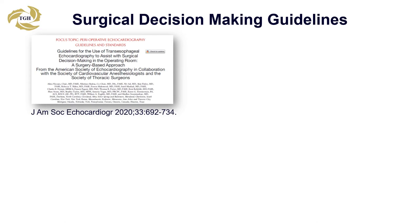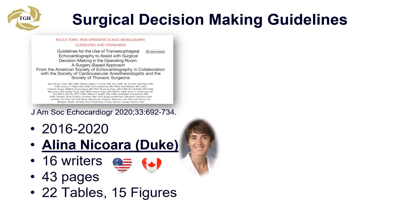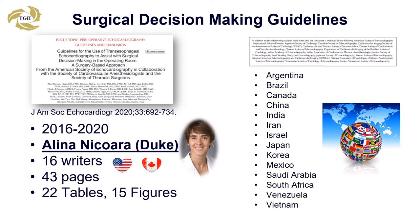Let's turn our attention to the surgical decision-making guidelines published in 2020. The project began in 2016, took a hiatus, and thanks to Dr. Alina Nakora from Duke, got back on track and was finished. The project had a diverse 16-member writing committee of experts representing North America. The document comprises 43 pages, 22 tables, and 15 figures. It was developed in collaboration with the Society of Cardiovascular Anesthesiologists and the Society of Thoracic Surgeons, and endorsed by 18 ASE international alliance partners from around the world.